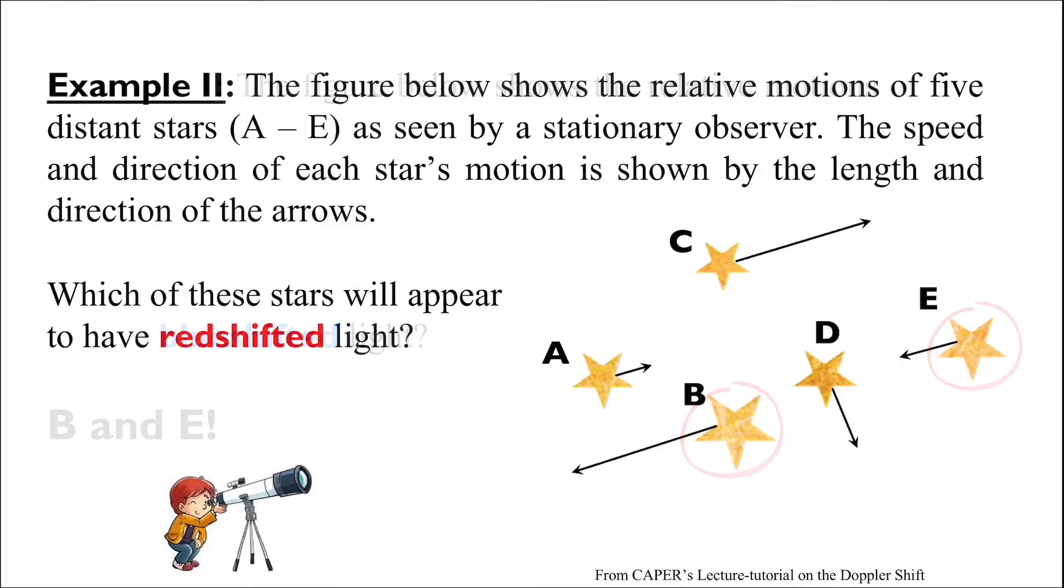Then, which ones have red-shifted light? If you answered A and C, you're correct. These are the stars that are moving away from the observer, so their light will be stretched, appearing redder than expected.